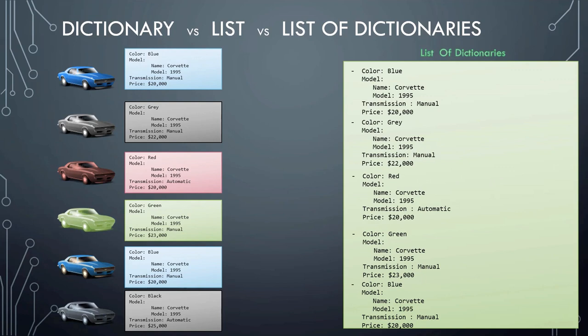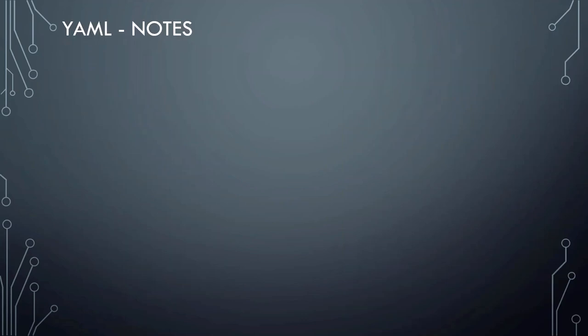So that's the difference between dictionary, list, and list of dictionaries. I hope you understood the difference between the three and when to use each of these. Before we head over to exercises, let's take a look at some key notes. Dictionary is an unordered collection, whereas lists are ordered collections.